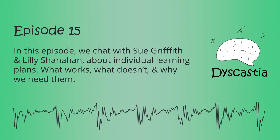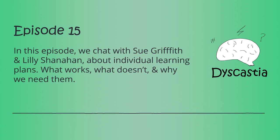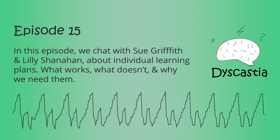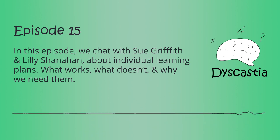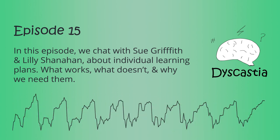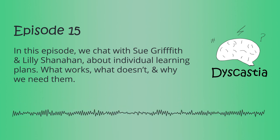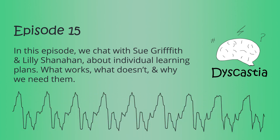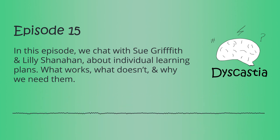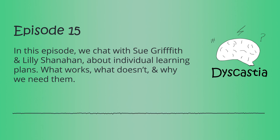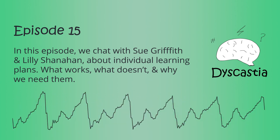Lots of kids reject any sort of support because it's seen as marking them out. Having an education support officer or SSO in the classroom with you is fine when you're quite young, but it doesn't take long before kids don't want that. They'd rather be withdrawn because maybe people don't notice. But they still see it — and the way we do it matters.